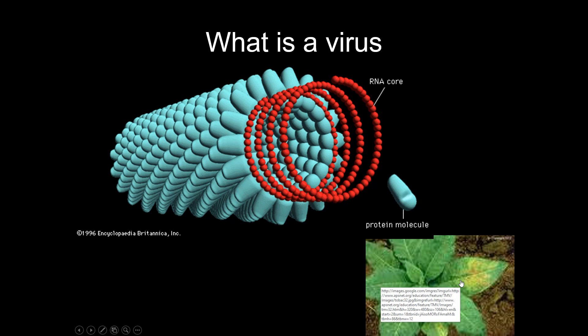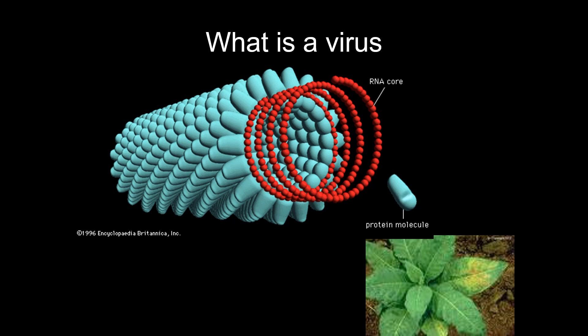Viruses tend to be made out of two things: a protein coat, which is blue in this picture, and then some type of nucleic acid, either DNA or RNA. This particular one happens to have an RNA core, but some will instead have DNA. They will never have both. This particular virus is tobacco mosaic virus — it infects tobacco plants and can cause the yellowing of the leaves you see here.